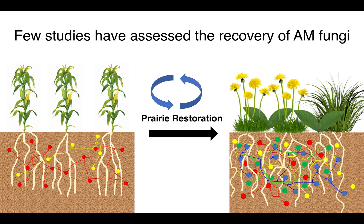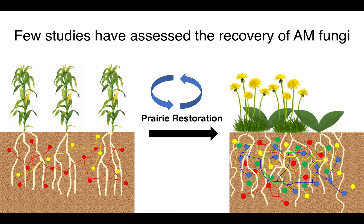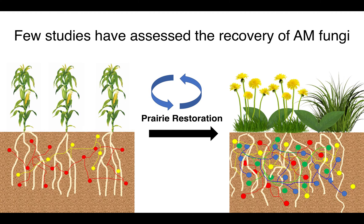So the question is, do prairie restorations reverse the impacts of agriculture on AM fungal communities? There have only been a few studies on this topic, and these few studies have mostly only focused on the recovery of biomass. Prairie restorations can triple the biomass of AM fungi in soils in less than 10 years. But there's only been one study to my knowledge on the recovery of species — a study by Vanderheide et al., published a couple years ago. These authors found gradual increases in species richness along a chrono sequence of restored prairies, but this study was restricted to the family taxonomic level and did not identify species present prior to restoration. So we still know very little about successional patterns in AM fungal recovery or whether they can recover at all.